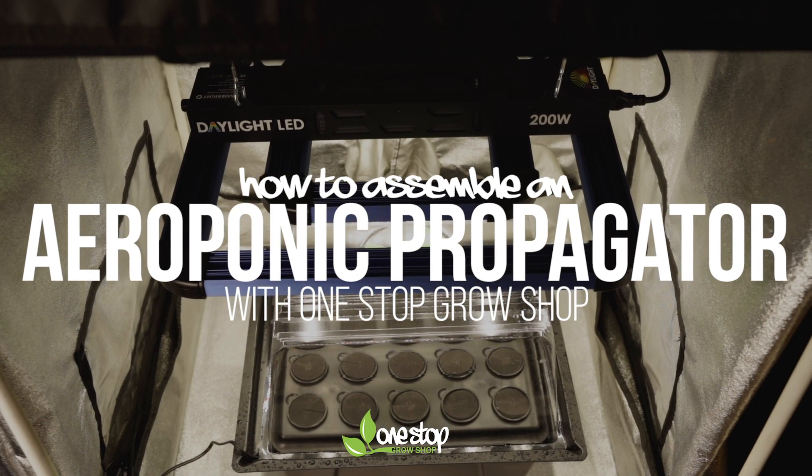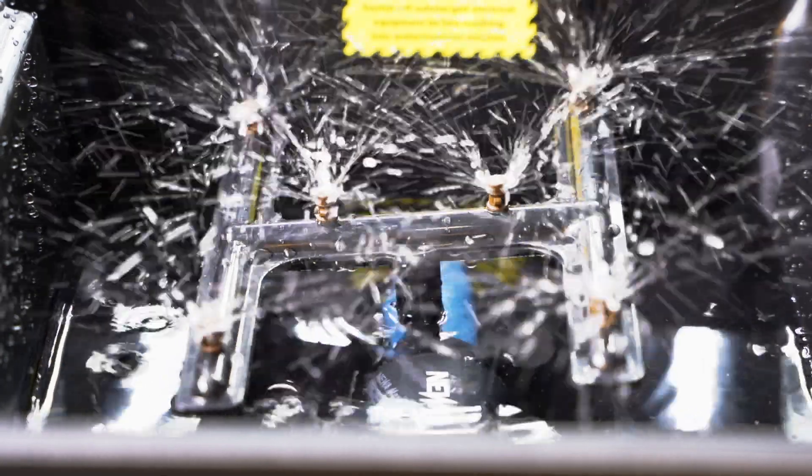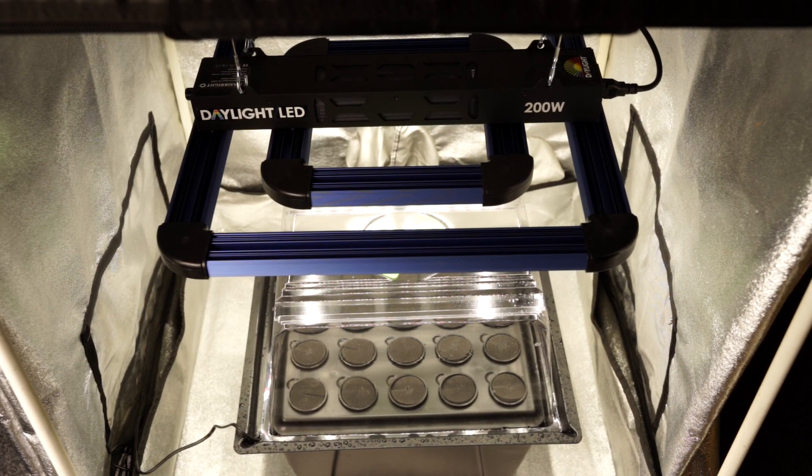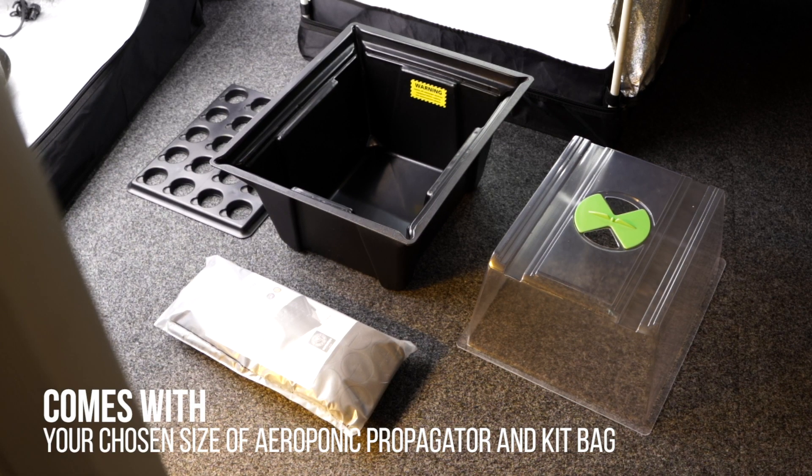So today we'll show you how to put together an aeroponic propagator. Aeroponic props keep roots super oxygenated, which speeds up turnaround times massively. They're easy to use and take minutes to set up.